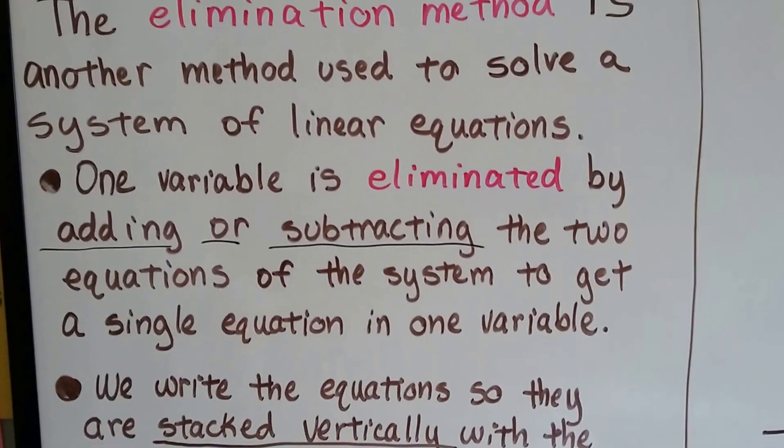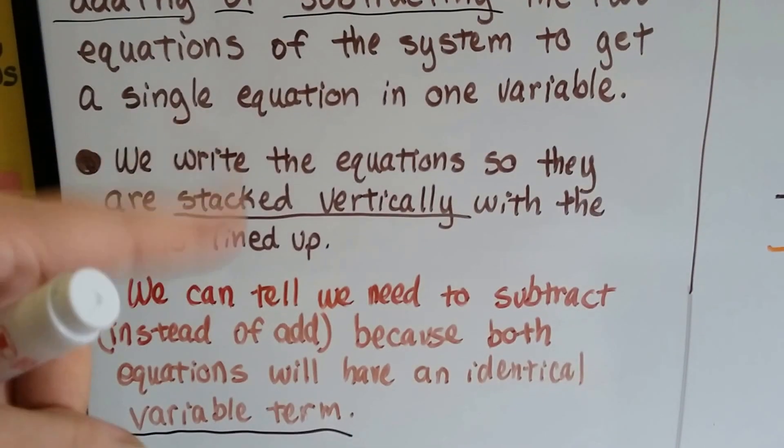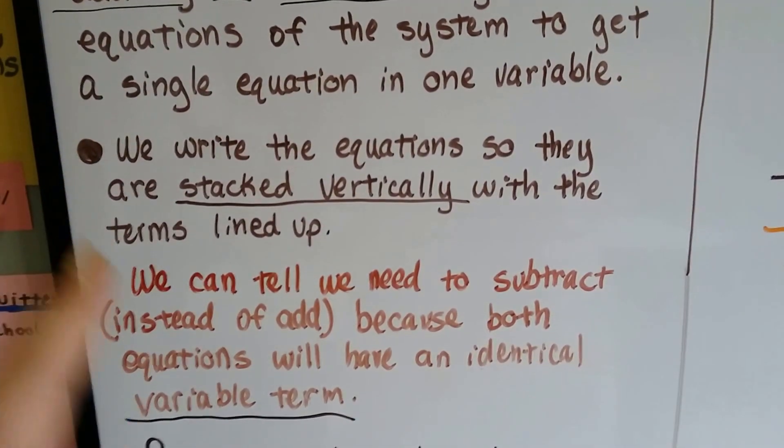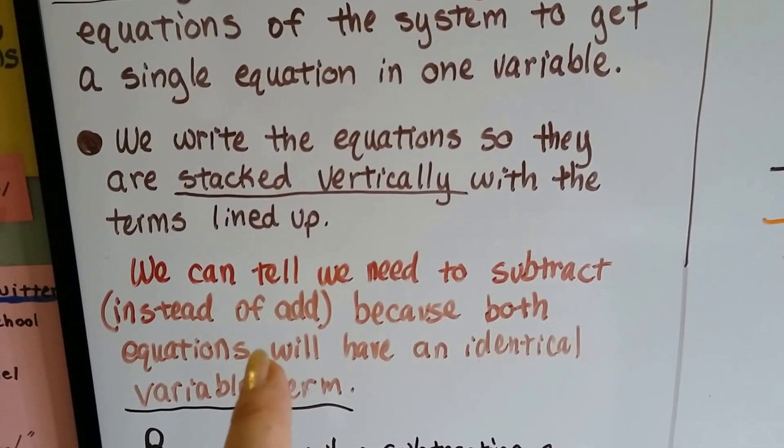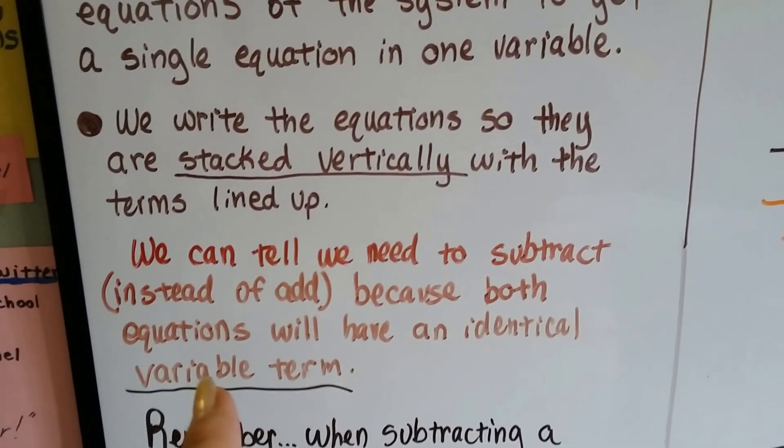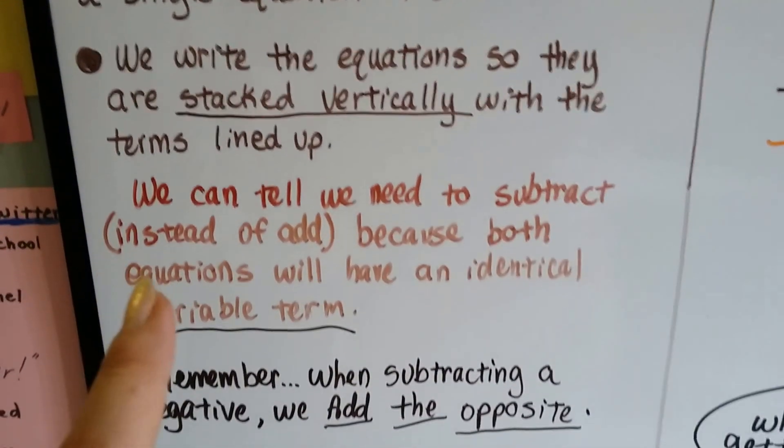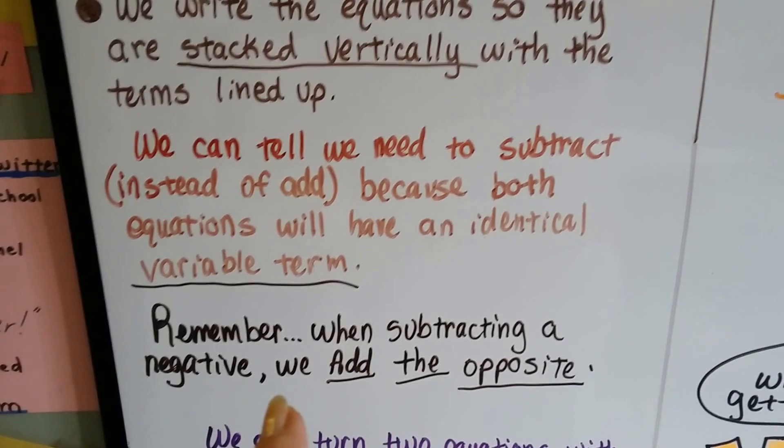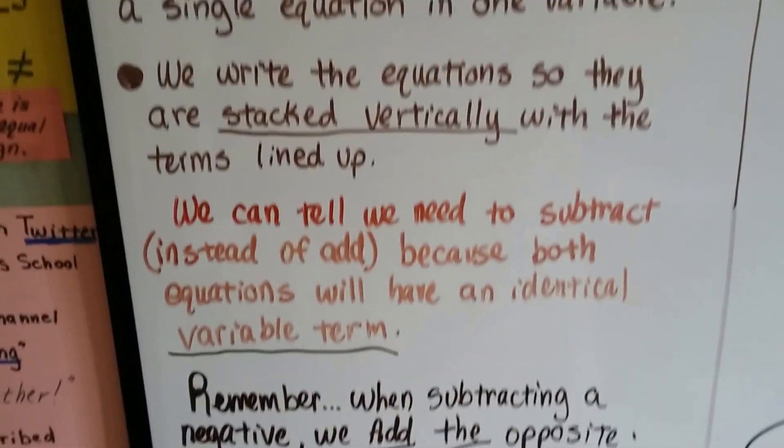Now, as we said in the last video, after we've stacked them vertically nice and neatly, we can tell that we need to subtract instead of add because both equations will have an identical variable term. So just remember, when subtracting a negative, we need to add the opposite.